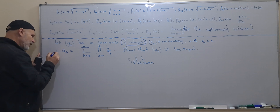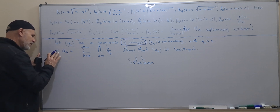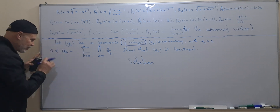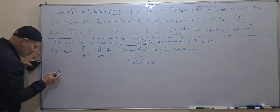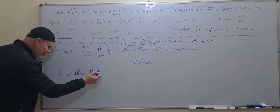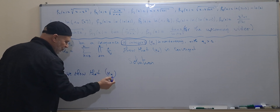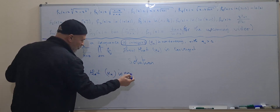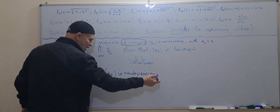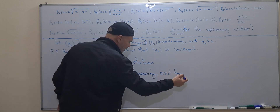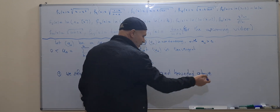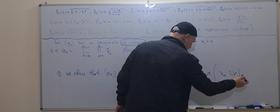Each term is greater than or equal to zero — in fact strictly greater than zero. To show that u_n is convergent, we show that u_n is non-decreasing and bounded above. These two conditions together imply that u_n is convergent.